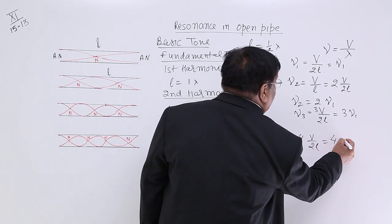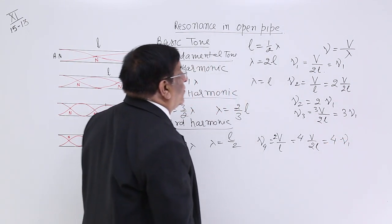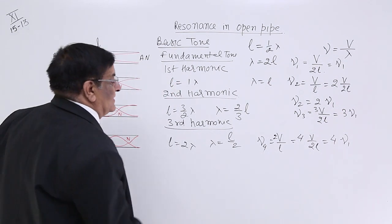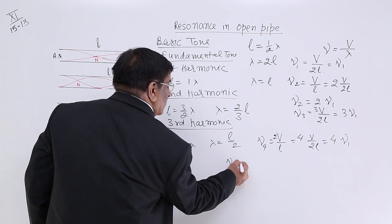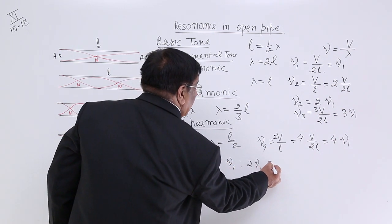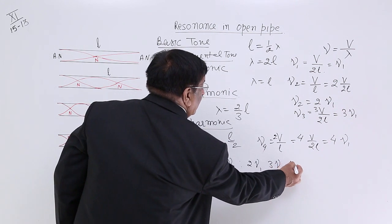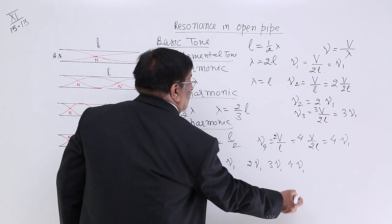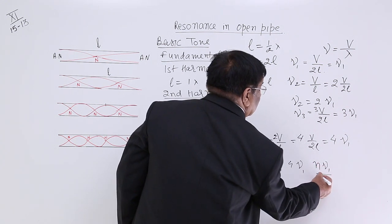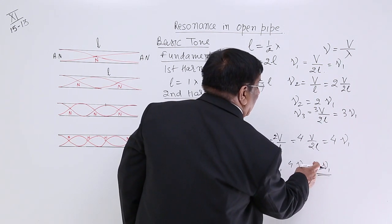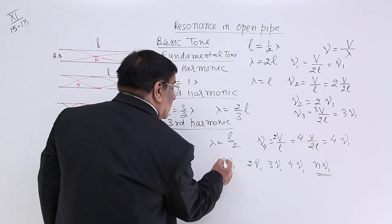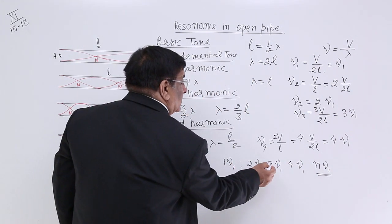So all these sounds we listen from the open pipe and what is their frequencies? We get the frequency nu1 and 2 nu1 and 3 nu1 and 4th nu1 and aneth nu1. What is this n? This is any integral multiple of the basic frequency and here we get 1, 2, 3, 4.